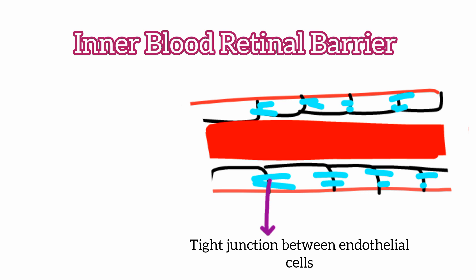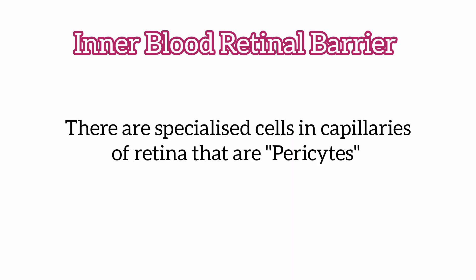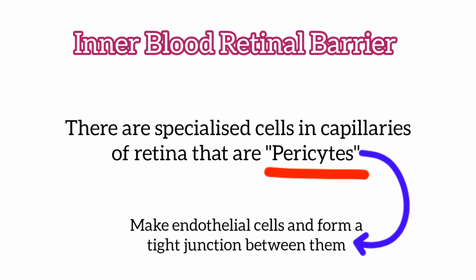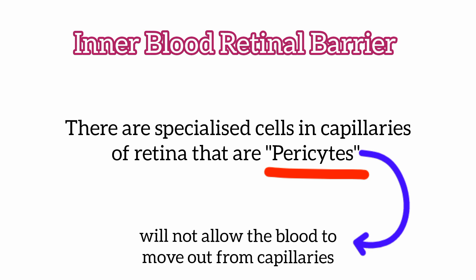There are specialized cells in the capillaries of the retina called pericytes, which form the endothelial cells of the retinal capillaries and create tight junctions between those endothelial cells. These pericytes, by forming the endothelial cells and tight junctions, prevent blood from coming out of the capillaries. If there is leakage, it can cause hemorrhages or leakage of blood into the retina, which is harmful since the retina is a semi-transparent structure.